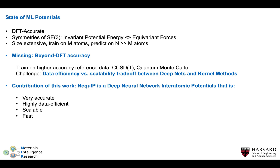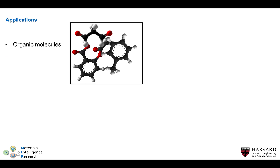What we're proposing in this work is NEQUIP, a deep neural network interatomic potential that is very accurate, data-efficient, scalable, and fast. Before going into the details, I want to give an overview of the applications we've tackled with this so far.